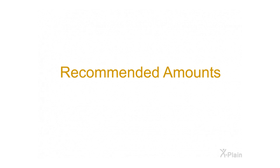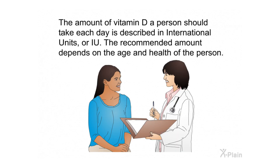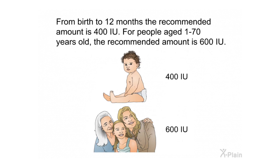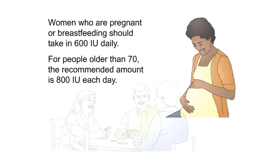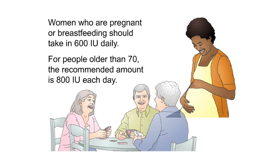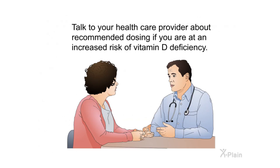The amount of vitamin D a person should take each day is described in international units, or IU. The recommended amount depends on age and health. From birth to 12 months, the recommended amount is 400 IU. For people aged 1 to 70 years old, the recommended amount is 600 IU. Women who are pregnant or breastfeeding should take 600 IU daily. For people older than 70, the recommended amount is 800 IU each day.